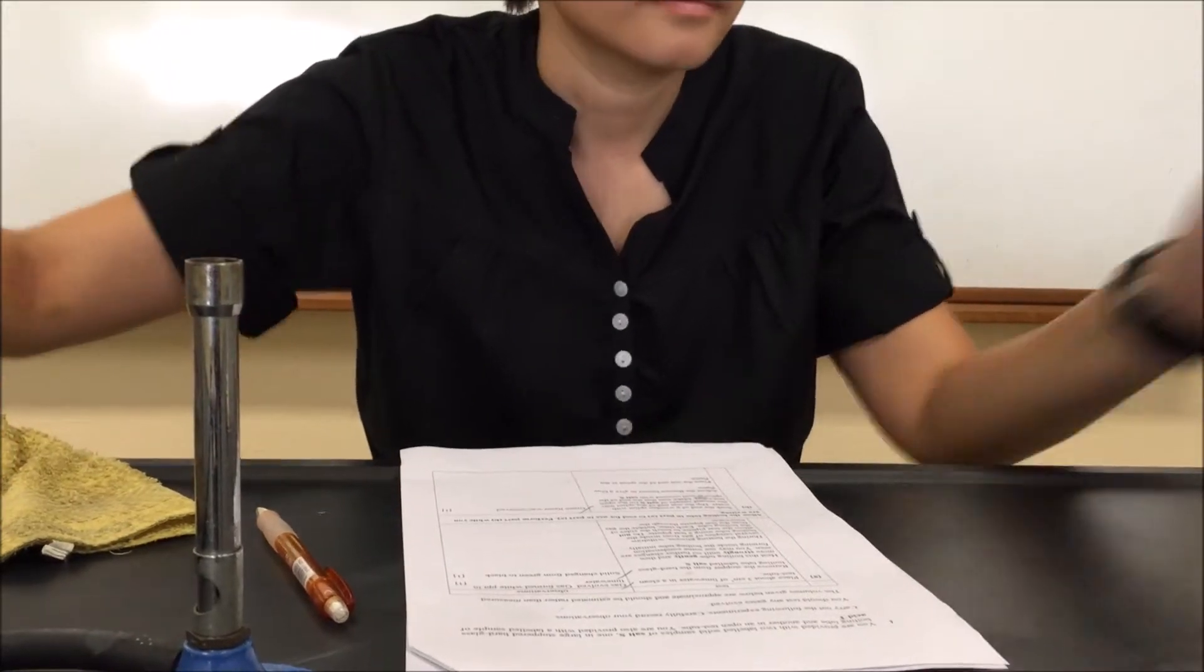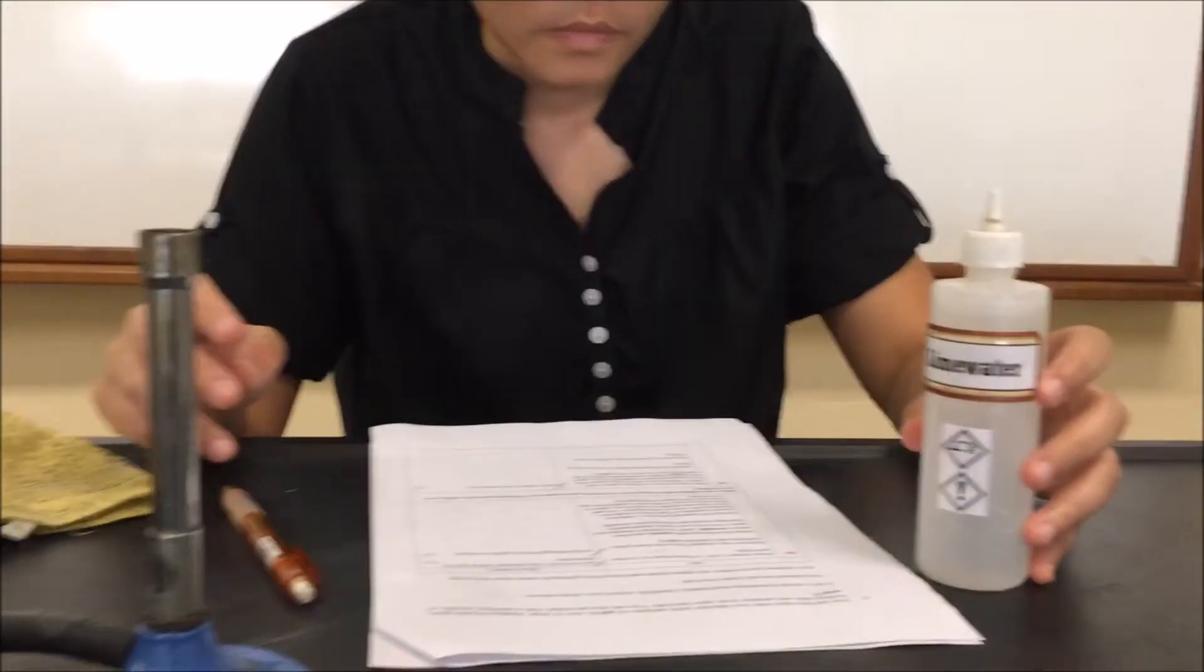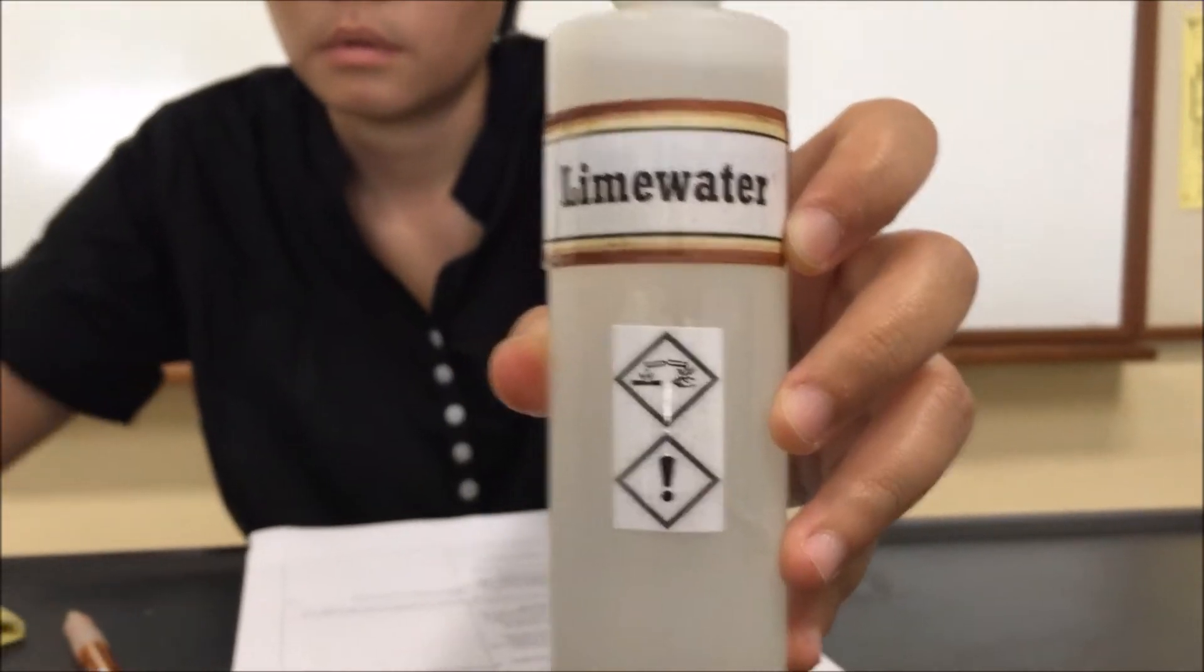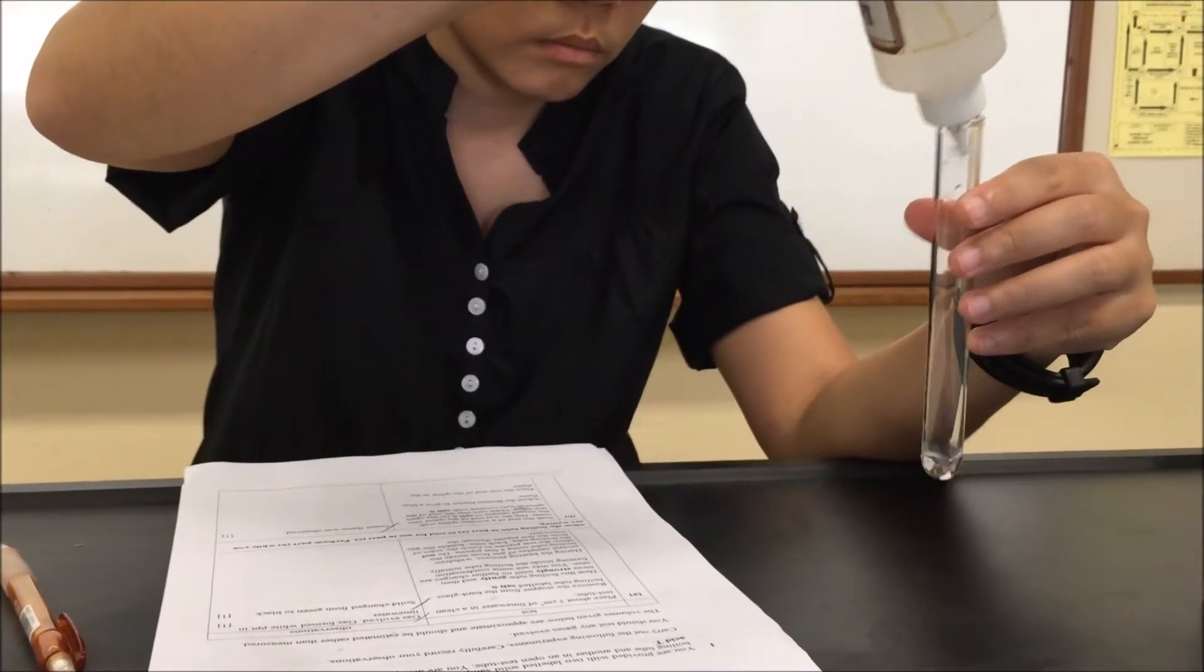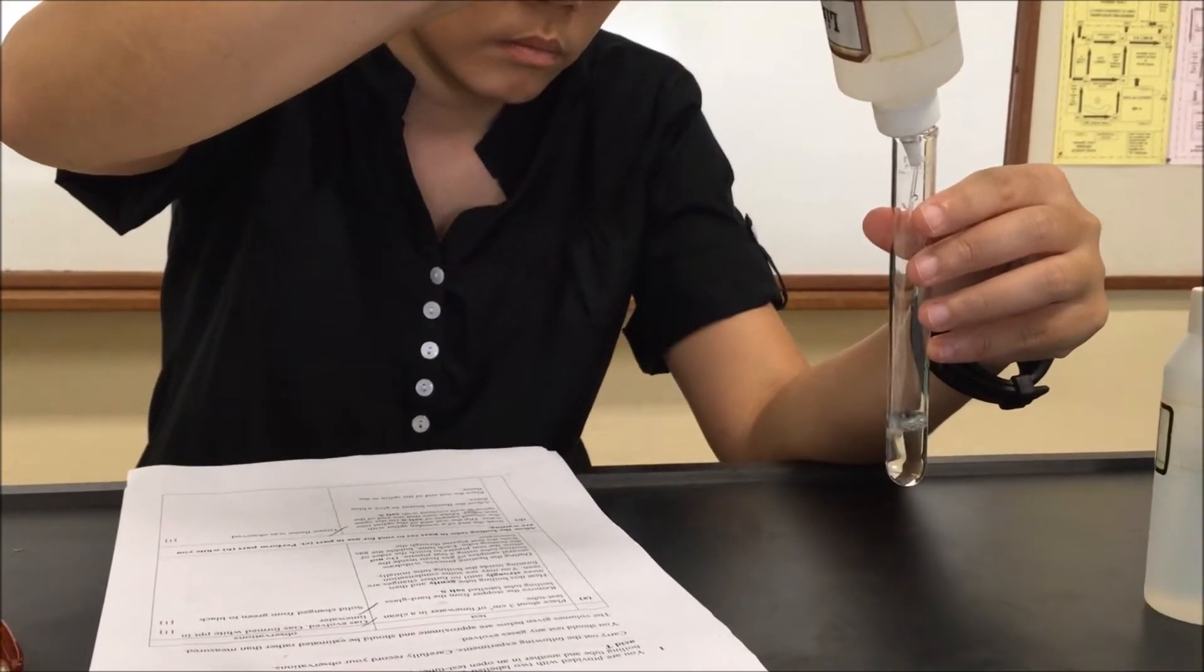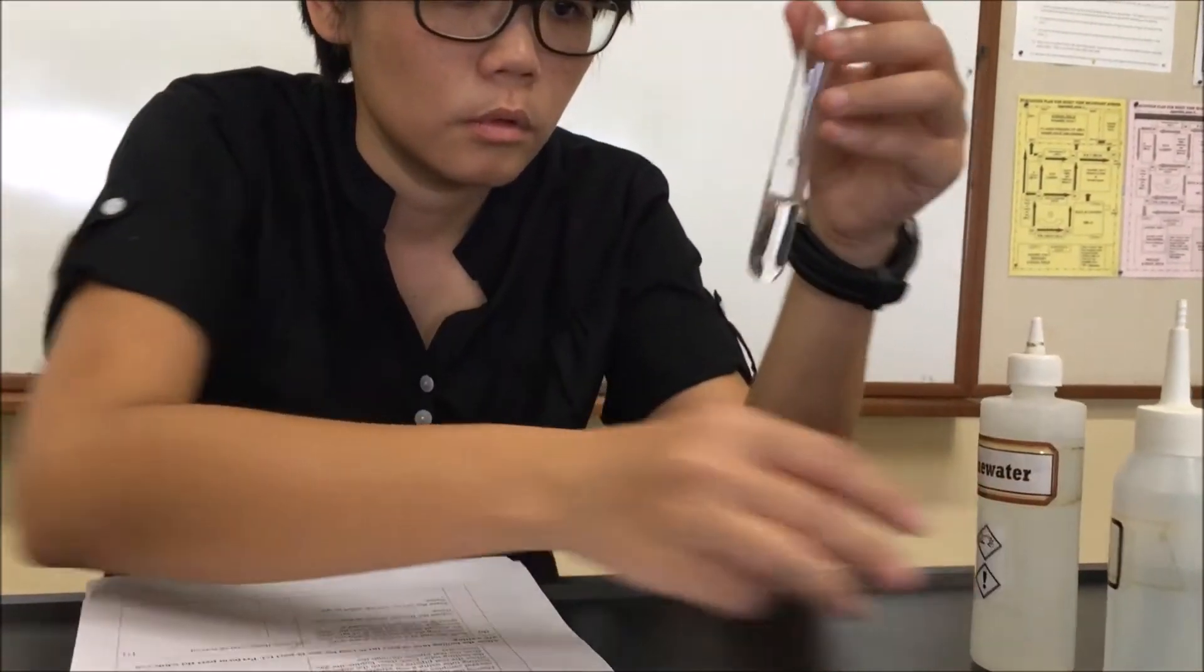We begin with part A, where we have to put 3 cubic centimeters of lime water in the glass tube. So we prepare that amount of lime water first, put it in the bag.